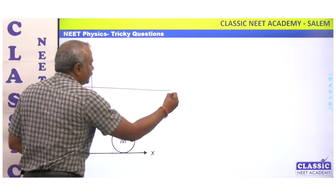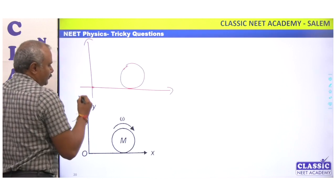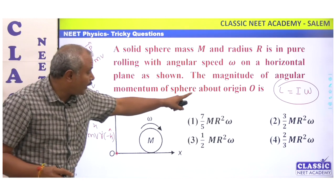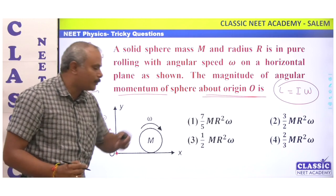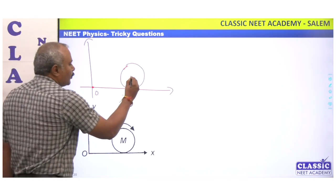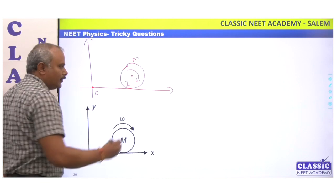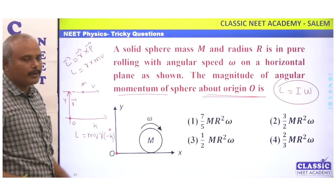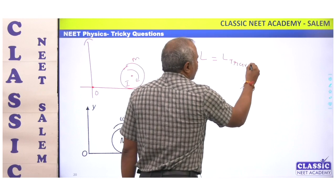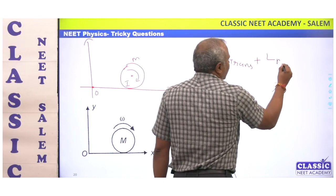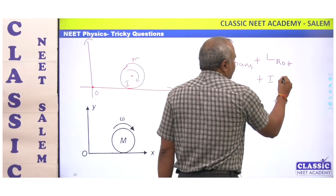It's rolling like this. With respect to origin — angular momentum with respect to origin. This is mass, and this is moment of inertia I. For a solid sphere, what is the angular momentum?